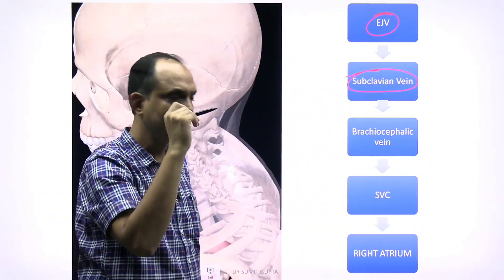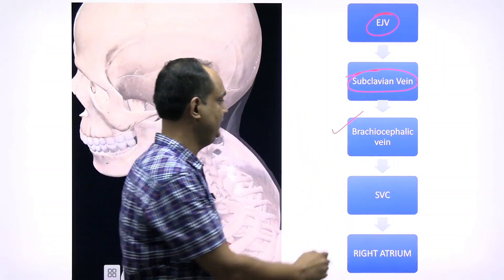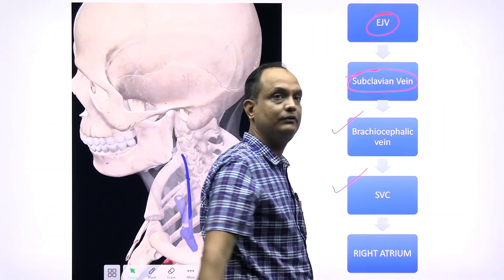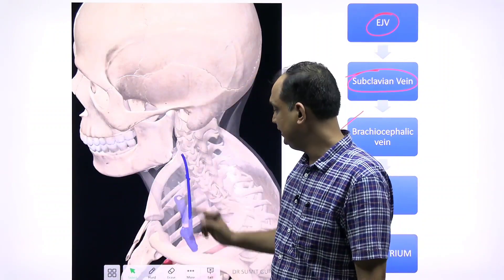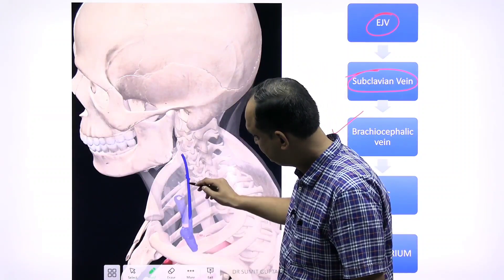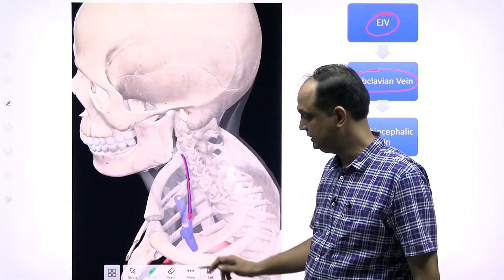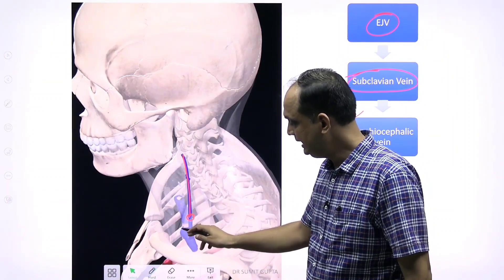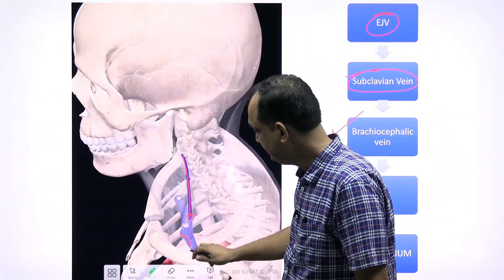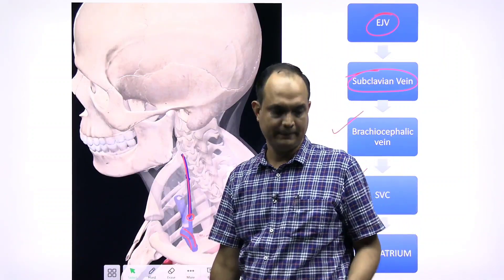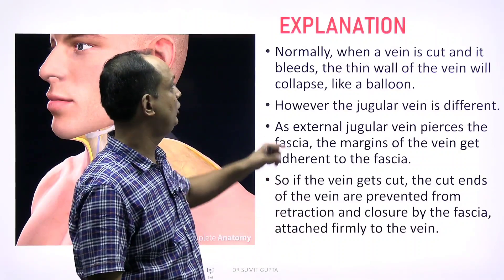The blood of the external jugular vein drains deeply into the subclavian vein after piercing the deep fascia. The subclavian vein opens into the brachiocephalic vein; brachiocephalic veins of both sides form the superior vena cava, and ultimately the blood enters the right side of the heart. In this image you can appreciate the external jugular vein piercing the deep fascia and joining the subclavian, which then joins the brachiocephalic vein.